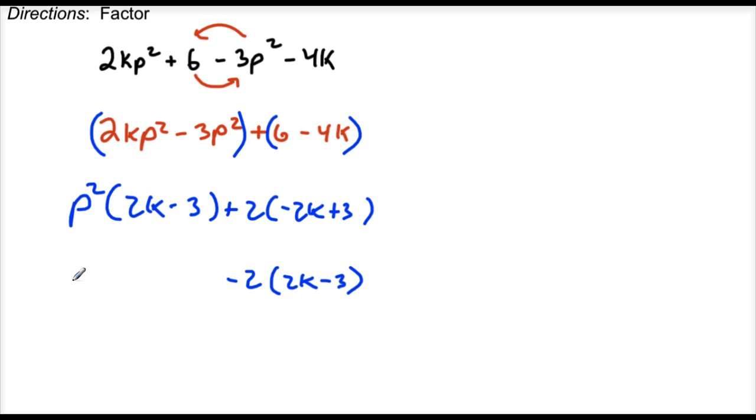Now notice that these are the same. What I did is if the signs need to be changed, then that means this factor needs to be changed—that sign needs to change as well. Lastly, since those are the same, that's going to be my GCF of 2k minus 3. Then what do I put inside? I put what I have left: p² minus 2, and that'll be it.